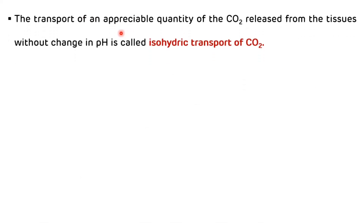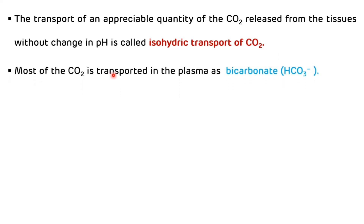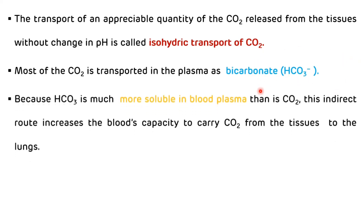The transport of an appreciable quantity of CO2 released from the tissues without a change in pH is called isohydric transport of CO2. Most CO2 transported in the plasma is in the form of bicarbonate (HCO3⁻). Because HCO3⁻ is much more soluble in blood plasma than CO2 itself, this indirect route increases blood capacity to carry CO2 from the tissues to the lungs.